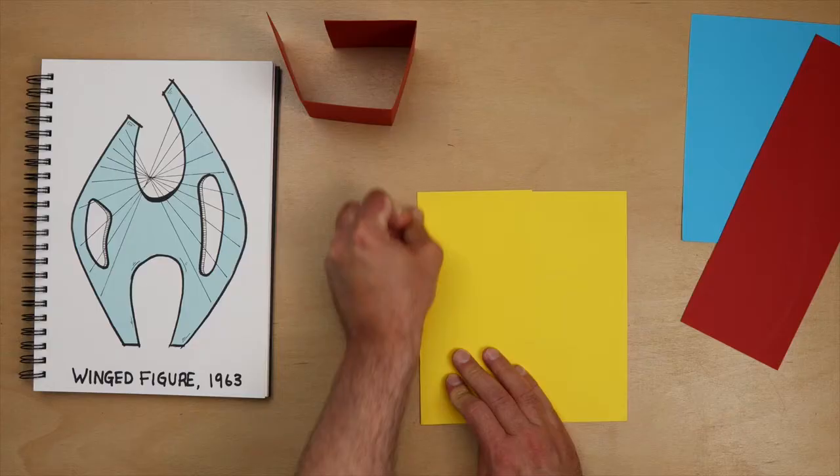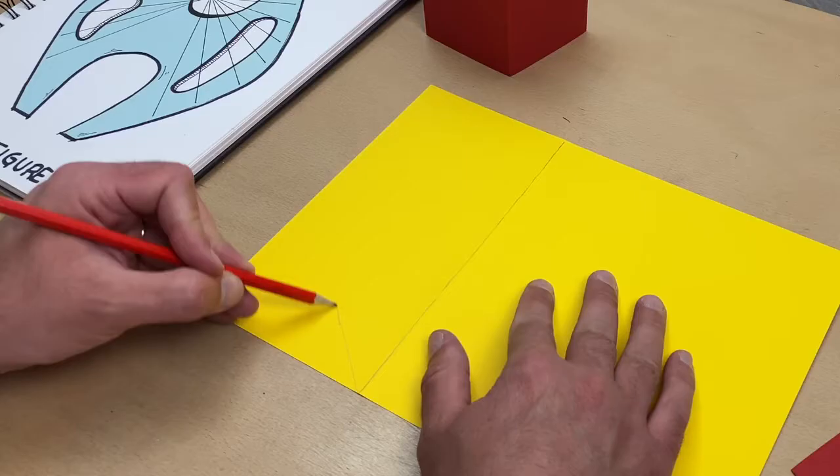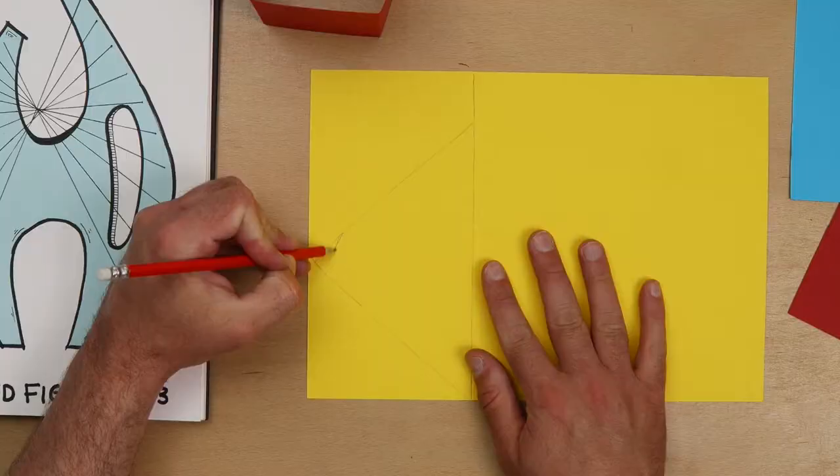Now I'm going to create a couple of wing shapes - one large, one small. Yours can be any shape you like. And remember that any scraps from cutting out can be reused later.